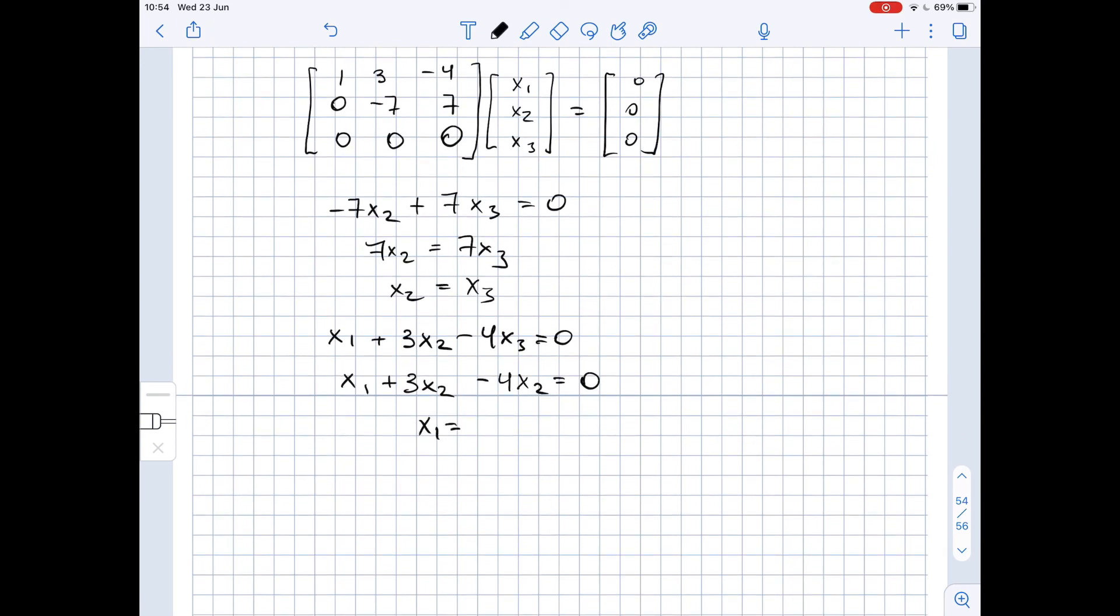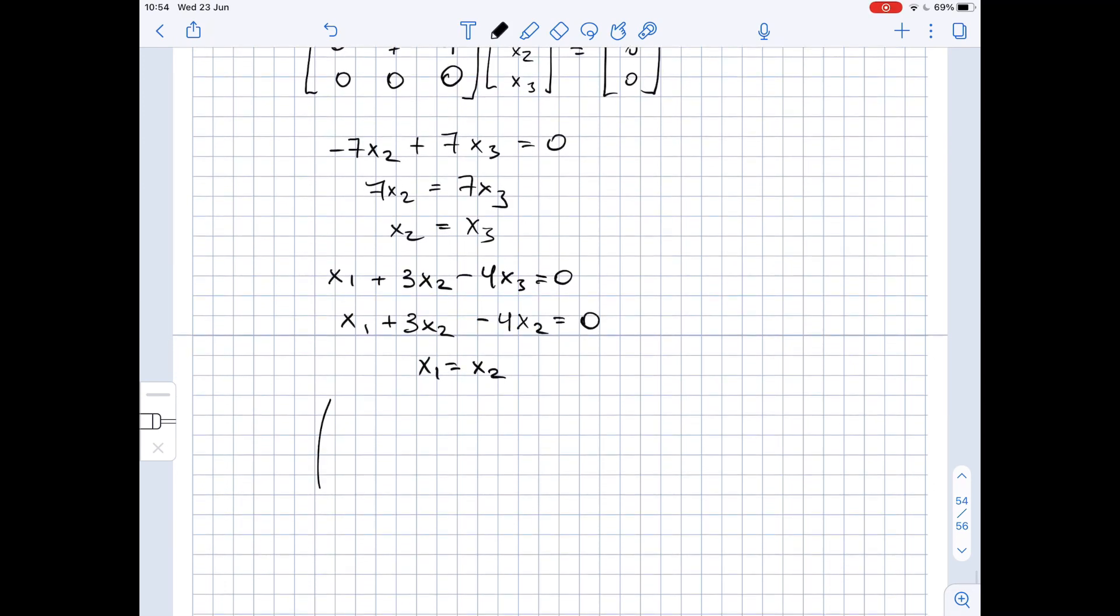Therefore, the null space is given by x1, x2, x3, which equals x2 times the vector one, one, one.